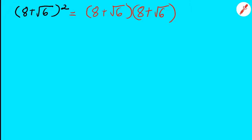I don't know if I said that right, so let me say it again: 8 plus the square root of 6 times 8 plus the square root of 6, and we are going to have to FOIL this. So: first, outside, inside, last.